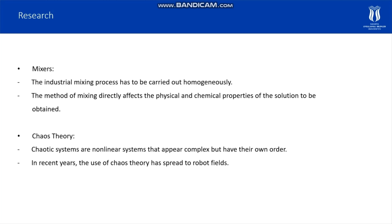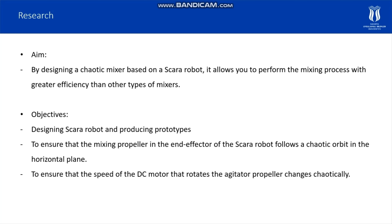The industrial mixing process has to be carried out homogeneously. The method of mixing directly affects the physical and chemical properties of the solution to be obtained. Chaotic systems are nonlinear systems that appear complex but have their own order. In recent years, the use of Chaos Theory has spread to robot fields. By designing a chaotic mixer based on a SCARA robot, it allows you to perform the mixing process with greater efficiency than other types of mixers.